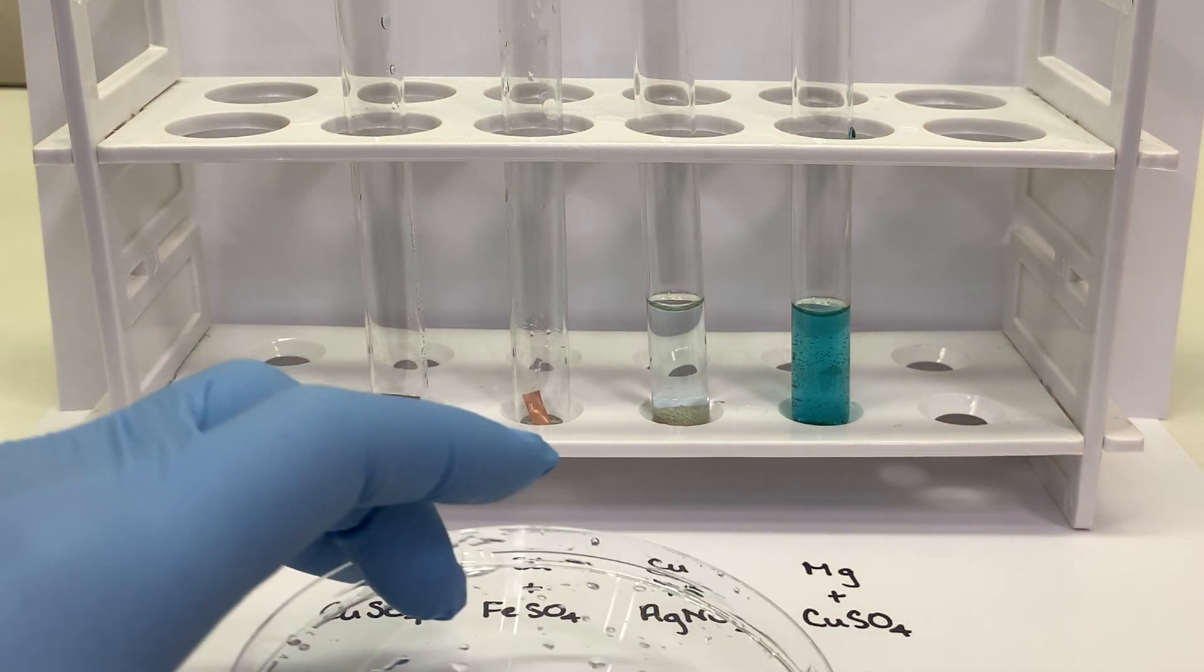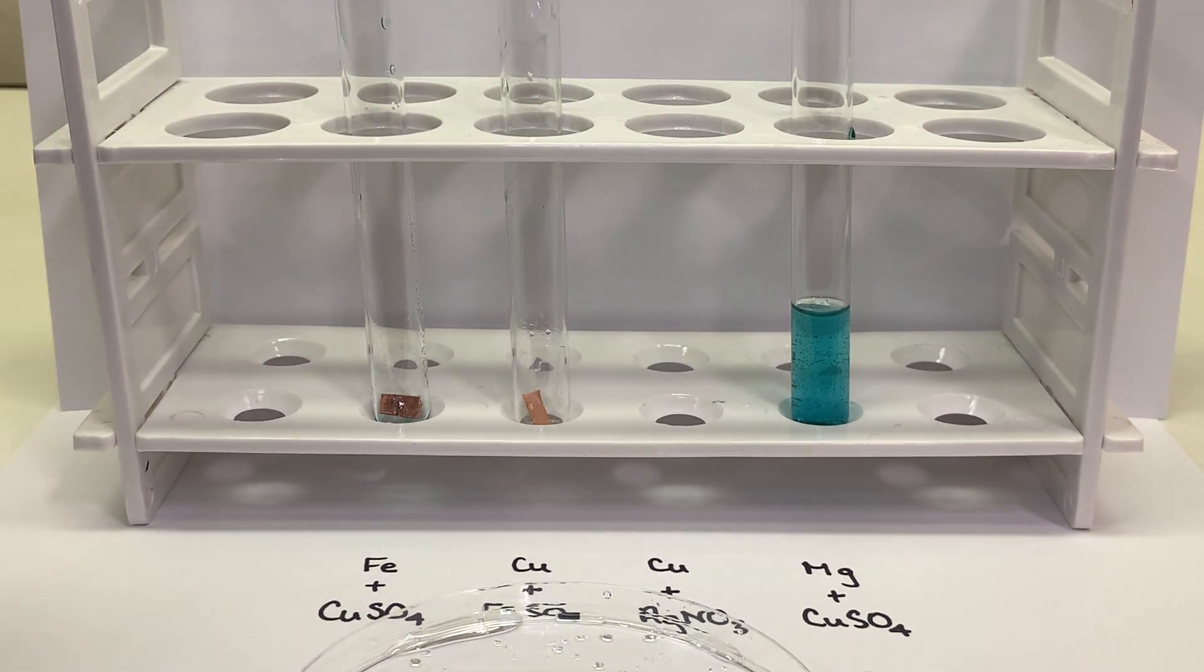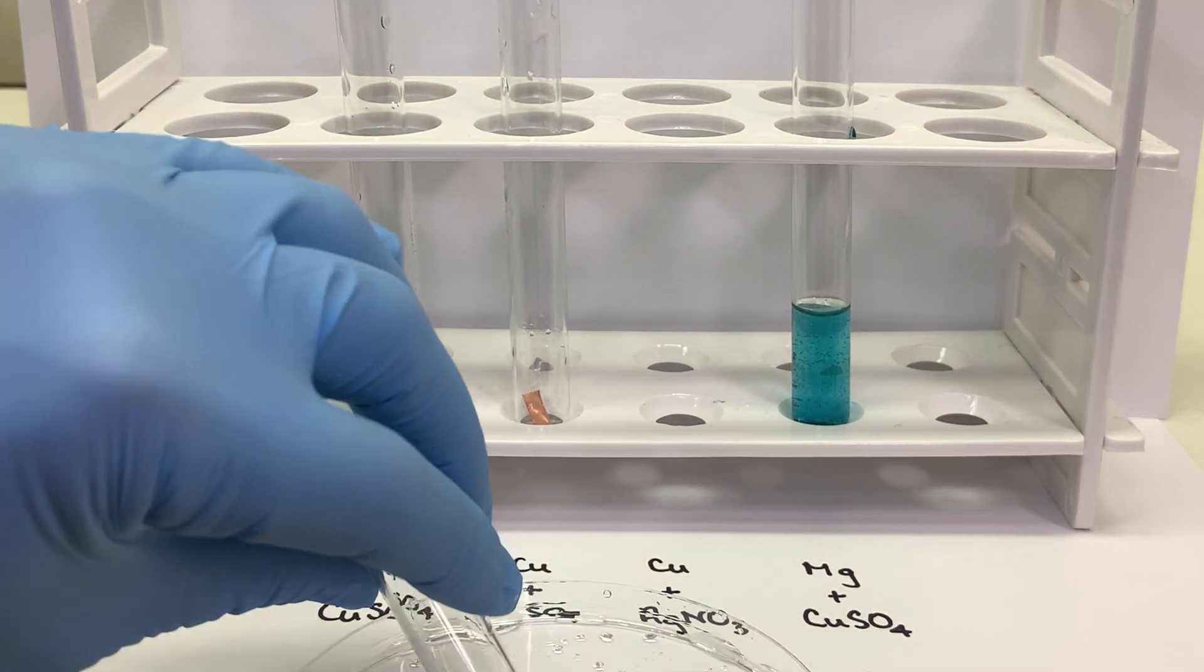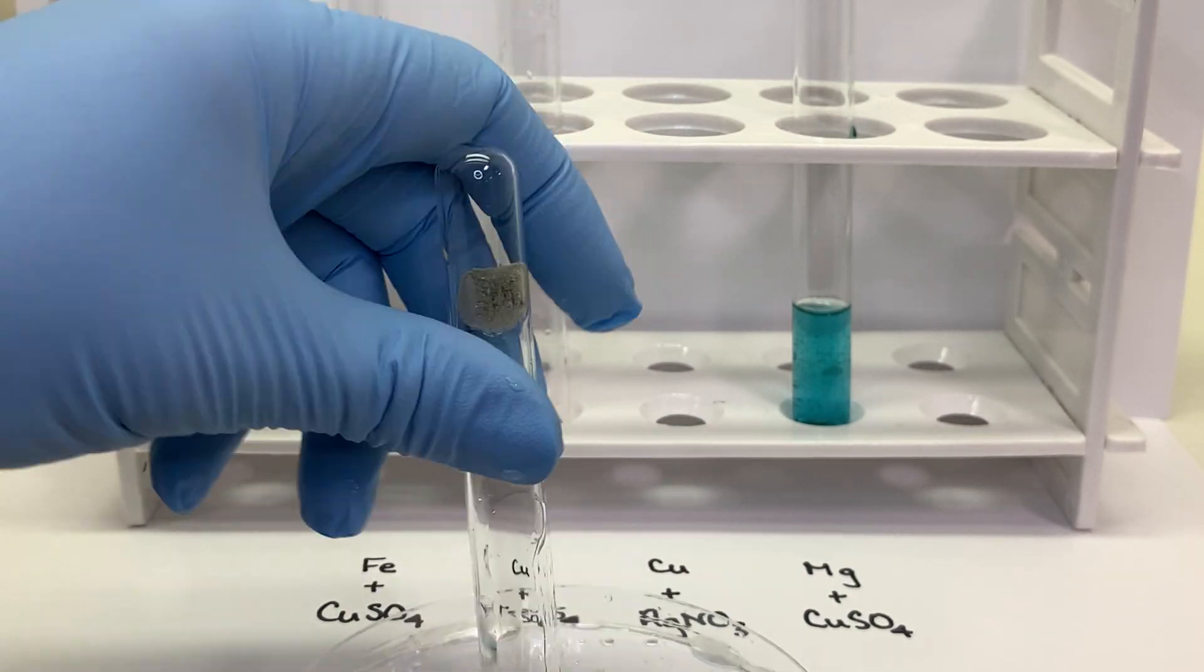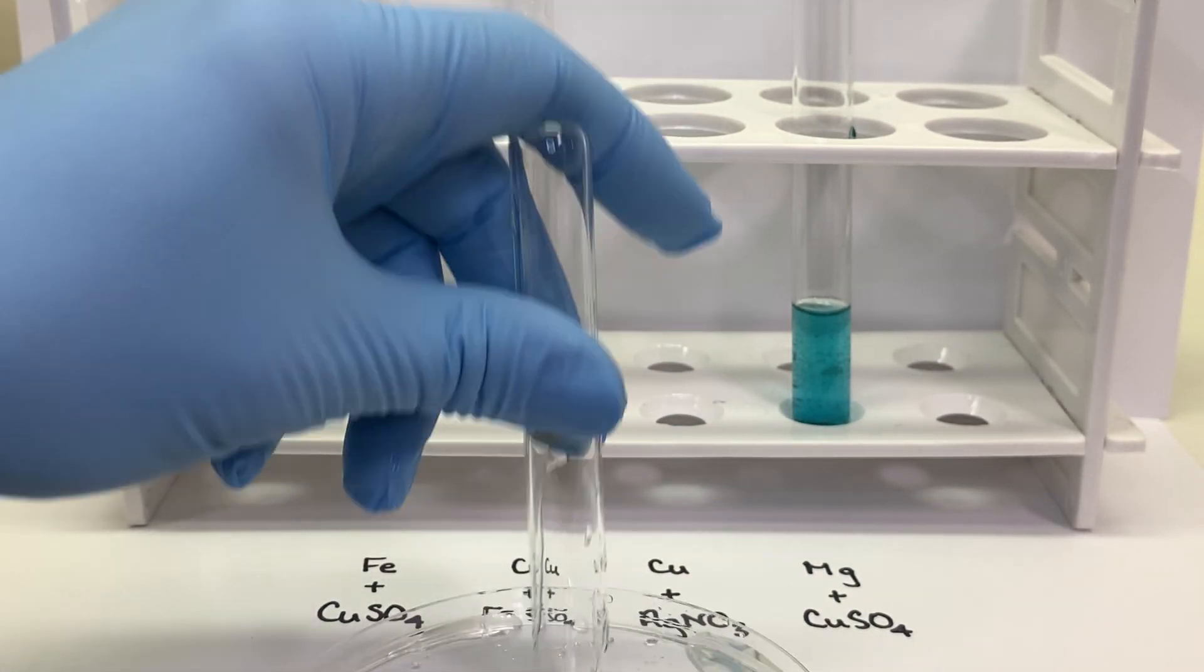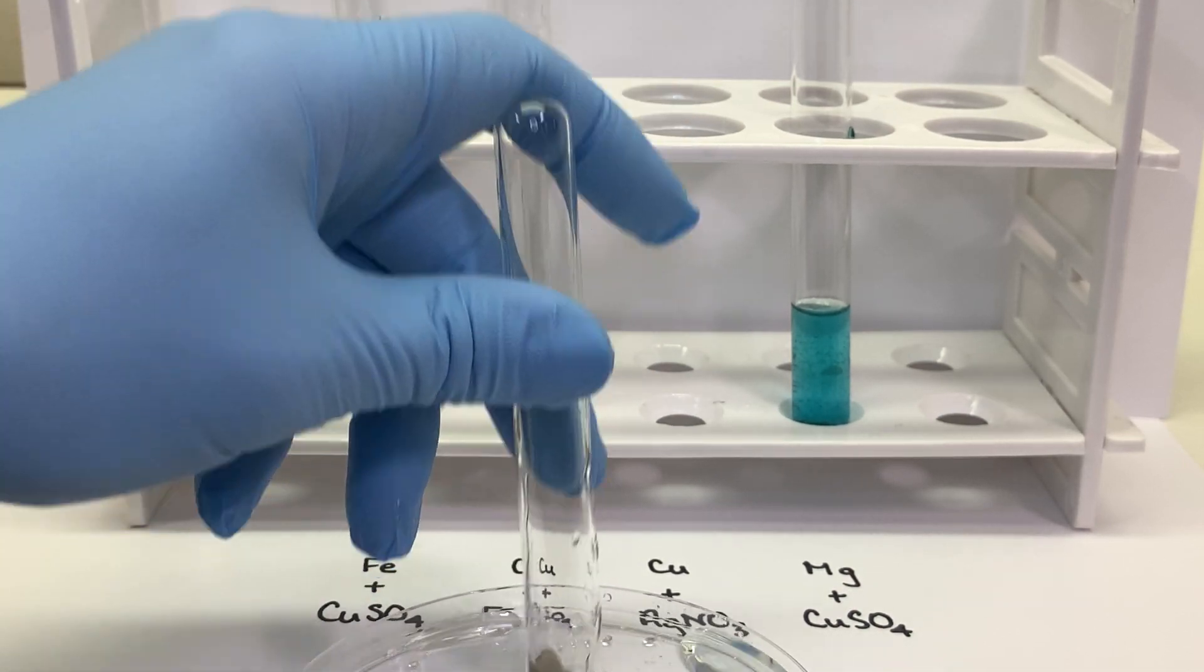Okay, our third combination was copper and a silver 1 nitrate solution. I'll try to get that out, it kind of got stuck at the bottom of the test tube, but you can sort of see what it looks like as I'm getting it out here.